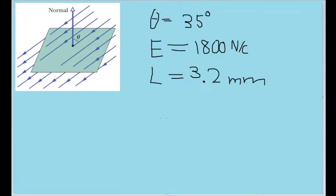The problem tasks us with finding the electric flux, or the amount of electric field through the surface. Now the first thing to note is that the electric flux is defined as the dot product of the electric field vector and the area vector.